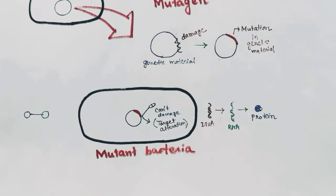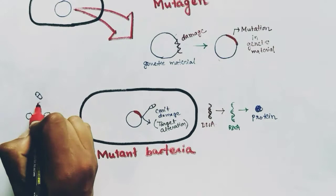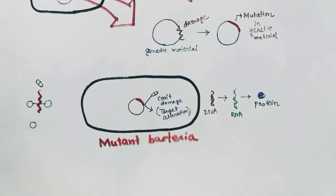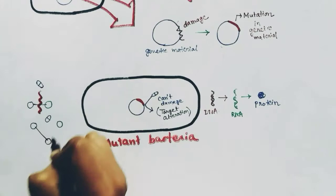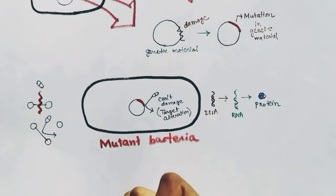Suppose there is a bond between a black ball and a green ball, and this antibiotic can break this bond. But when the black ball connects to a red ball, the antibiotic cannot break that bond because it is not designed to break that bond — it can only break the bond between the black and the green. So it cannot break the bond when the target is altered.